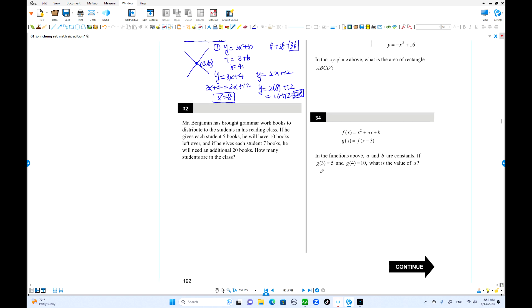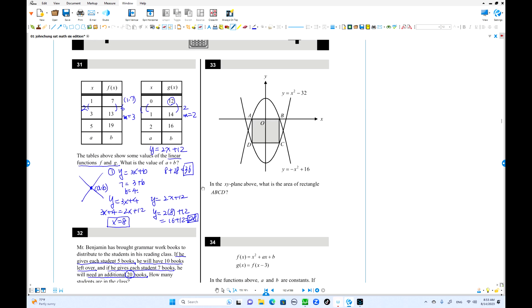Problem 32: If he gives each student 5 books, he'll have 10 books left over. If he gives each student 7 books, he'll need an additional 20 books. How many students? Let student number be n. Total books in first scenario: 5n plus 10. In second scenario: 7n minus 20. These are equal: 5n + 30 equals 7n. So 2n equals 30, and n equals 15 students.